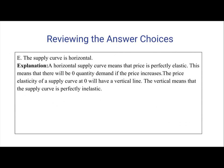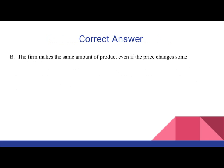The price elasticity of the supply curve at zero will have a vertical line. A vertical line means that the supply curve is perfectly inelastic. So answer E is incorrect. Therefore, answer B — the firm makes the same amount of products even though the price changes some — is the correct answer.